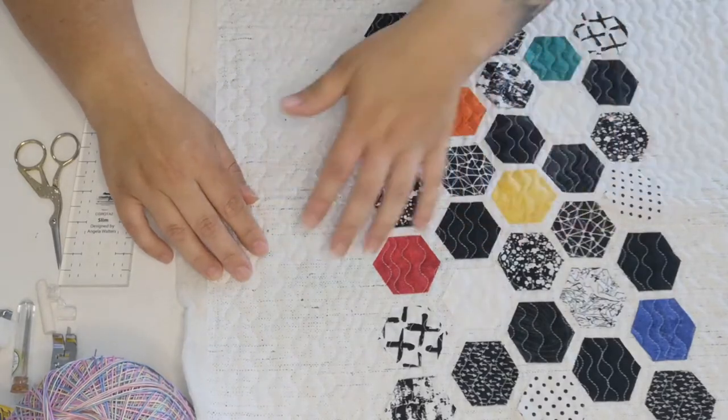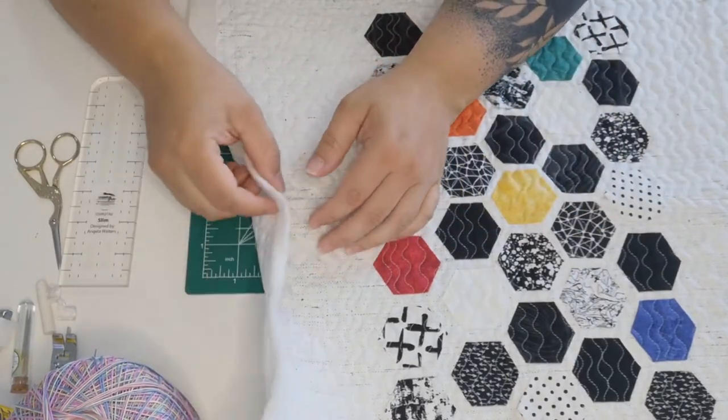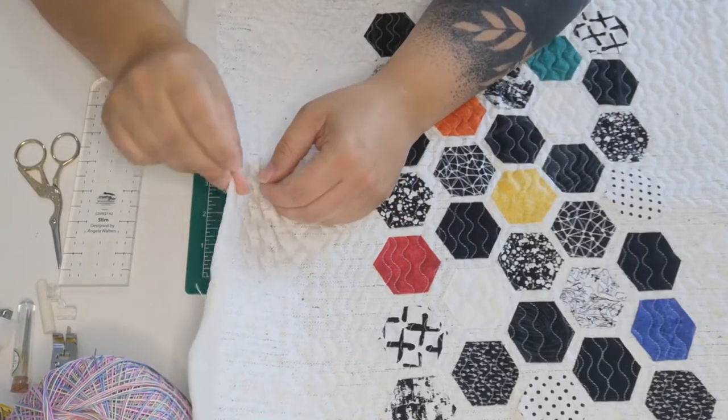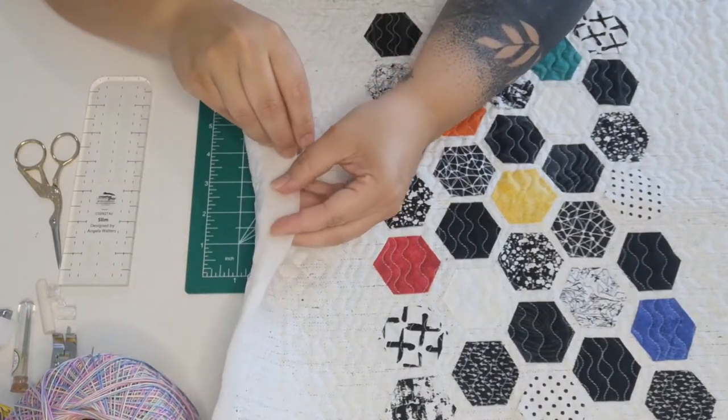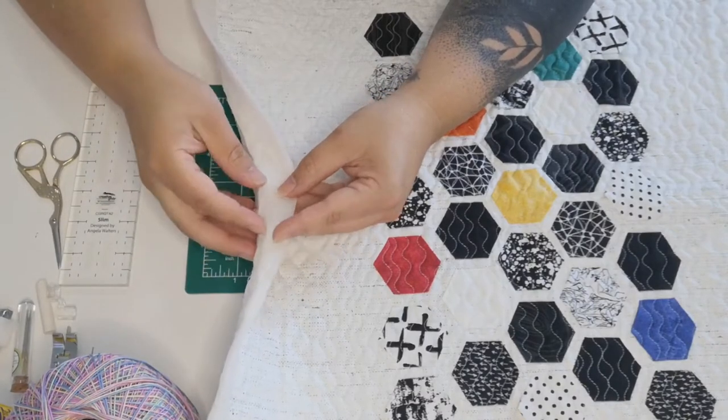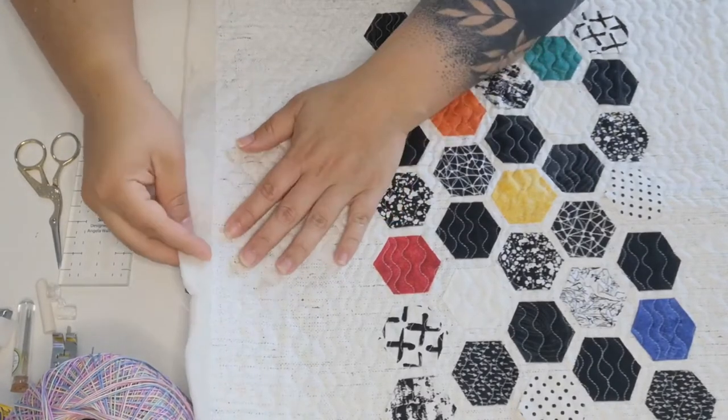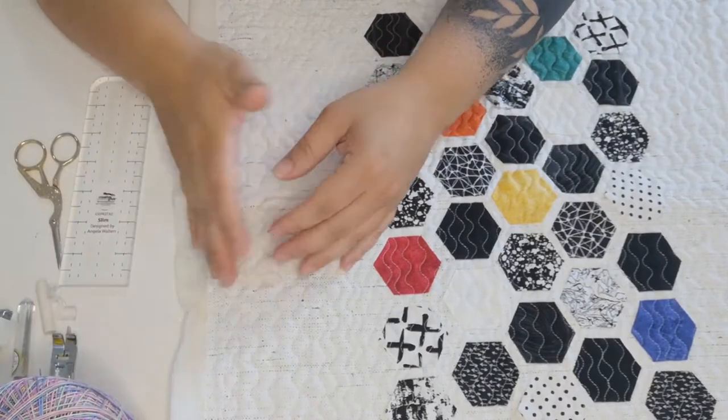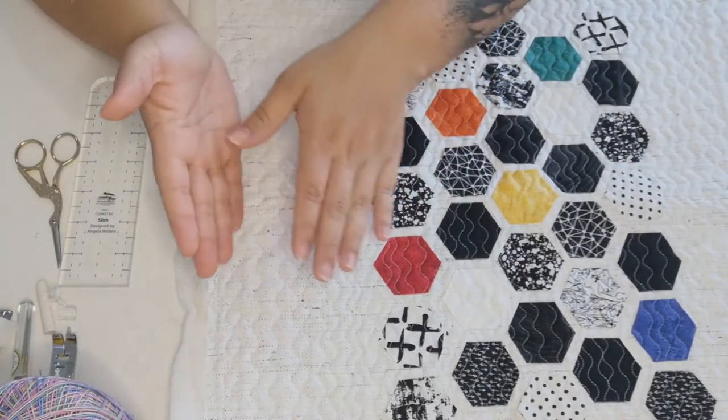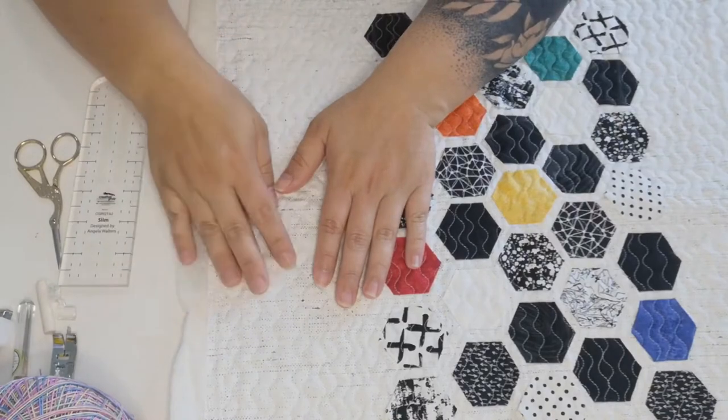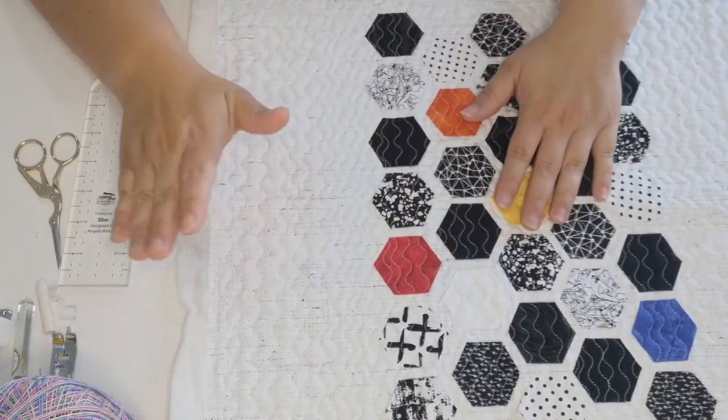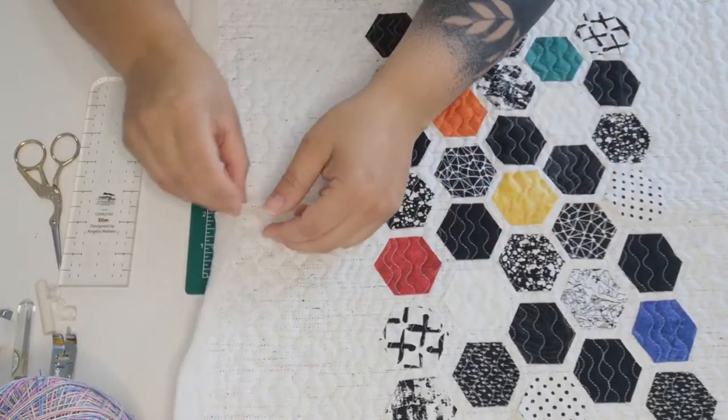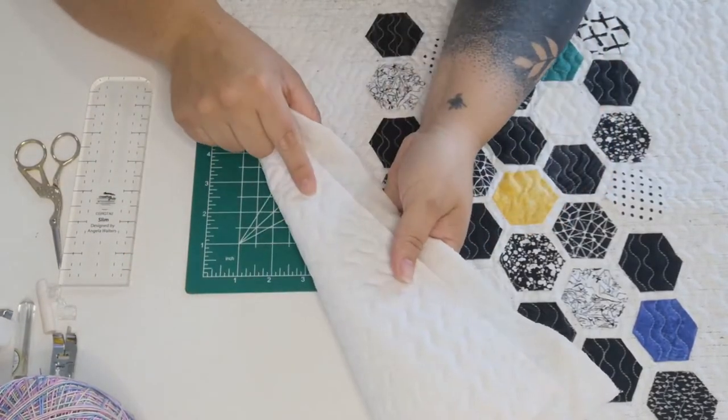Remember we cut that out to be 20 by 20 inches and then to that you're going to attach your batting. For this one this is Hobbs 80/20, so it's 80% cotton and 20% polyester. There's a few different ways to attach your sandwich all together and I'm going to go through those with you. Your quilt sandwich consists of your topper, your batting and your backing fabric.